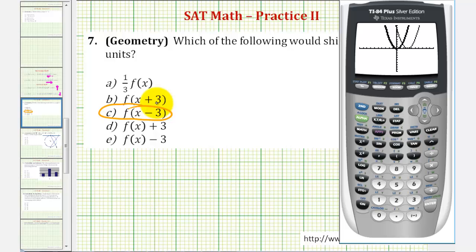Let's also check a few of these other ones. If we wanted to check b, we could press y equals, and just change this to y one of x plus three. And if we press graph, there's the original. Notice how now the graph is shifted left three units, and we're looking for a shift right.